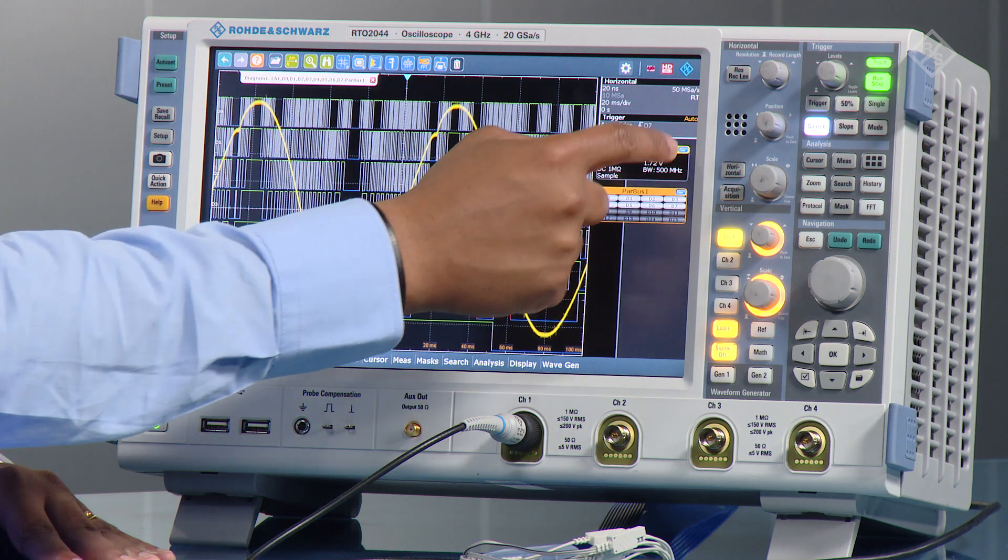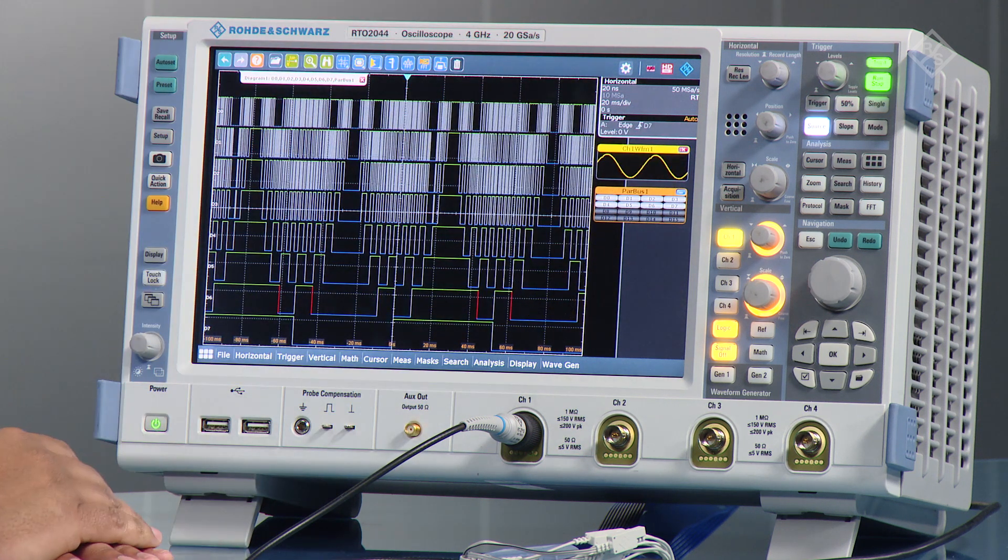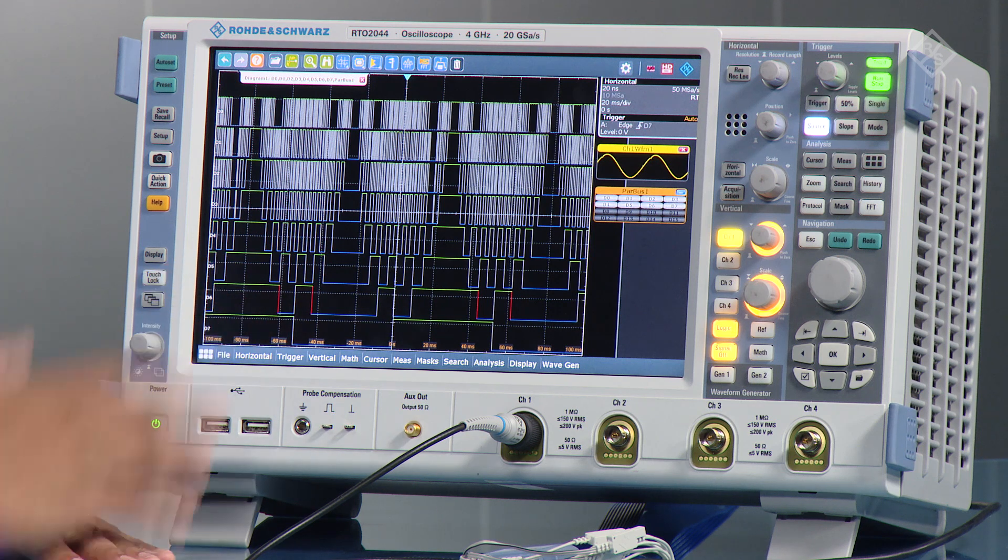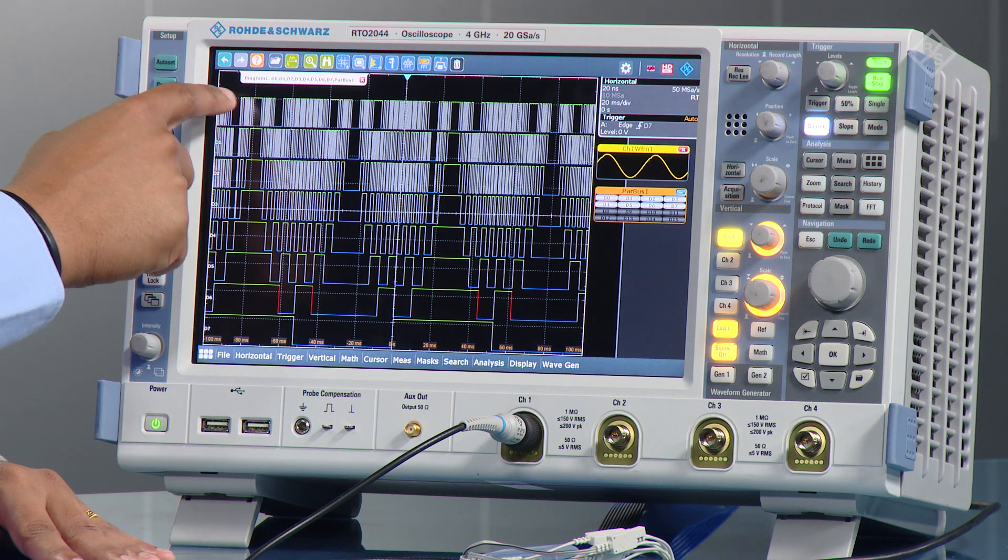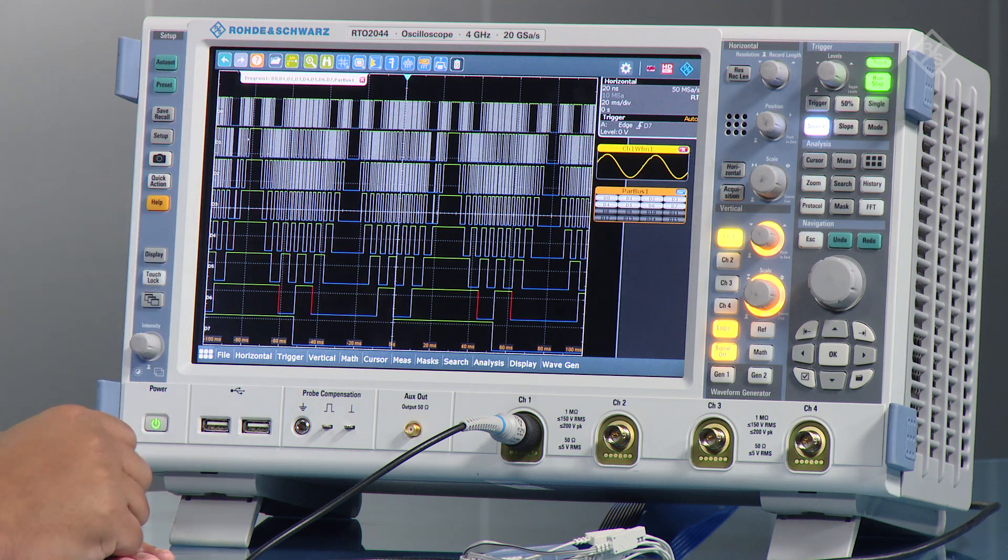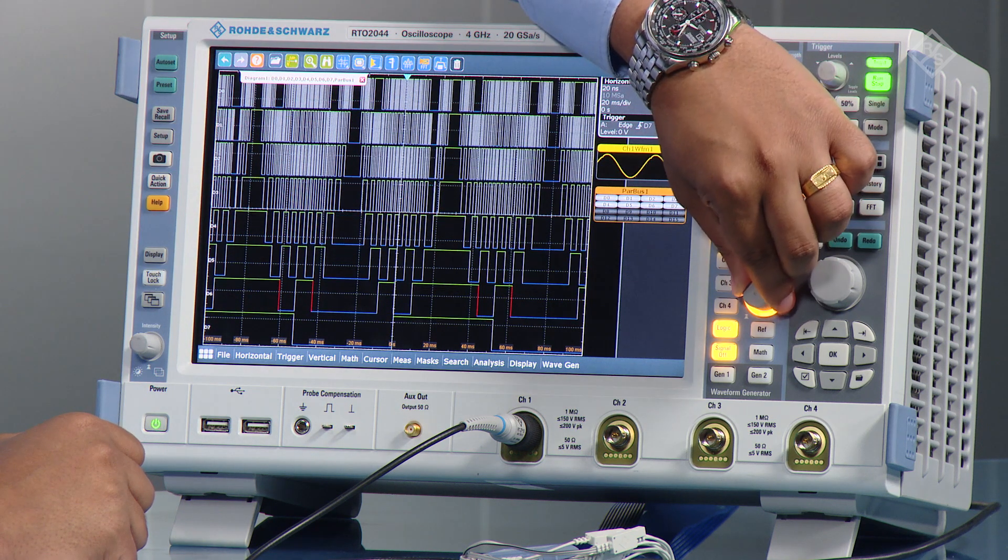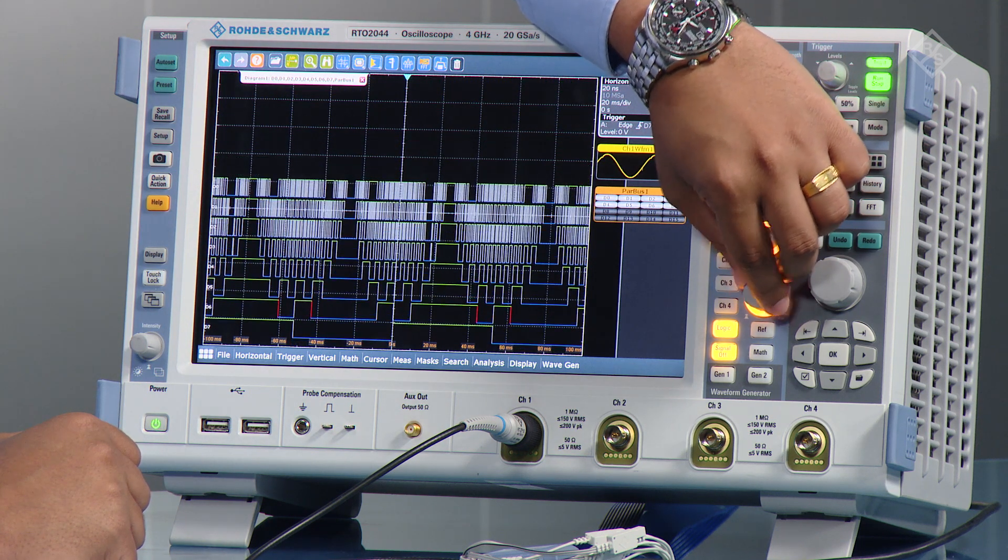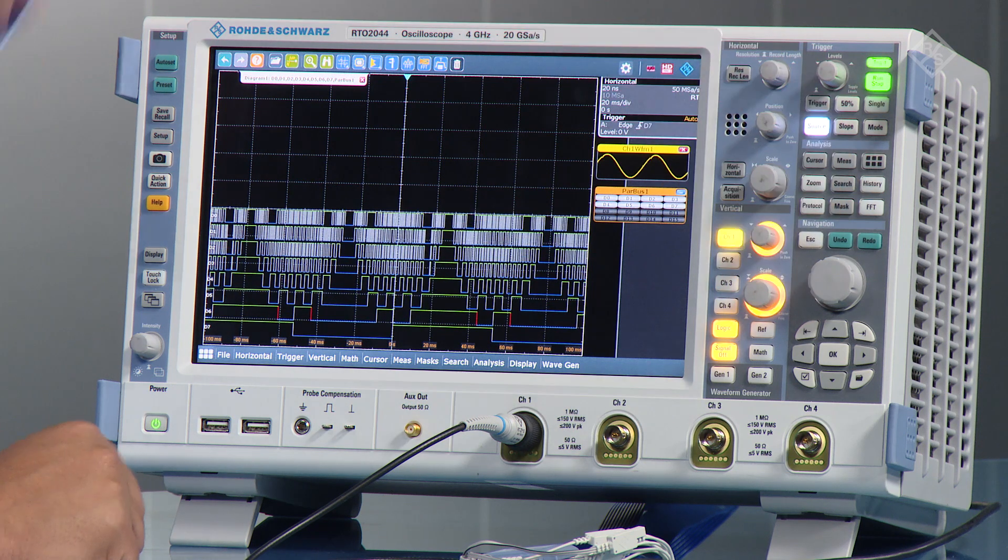I'm going to go ahead and minimize my analog channels, so we can actually just see those digital channels that are being built up there. And as you can see, we can either pick one of these up, move them around, or pick them up as a group, change the actual scaling of each of these, and so forth as well.